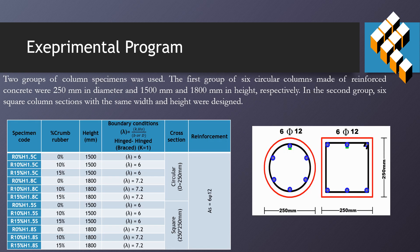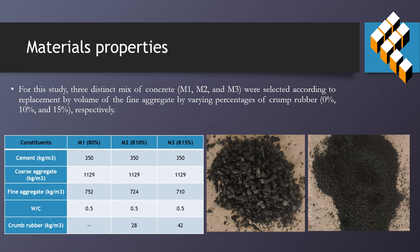The first group consisted of six circular reinforced concrete columns, 250 mm in diameter and 1,500 mm and 1,800 mm in height respectively. In the second group, six square column sections with the same width and height were designed.